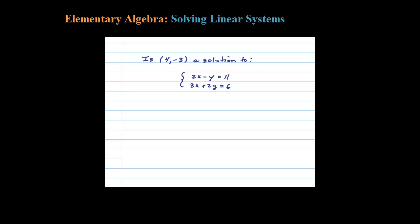Here we're asked if the ordered pair (4, -3) is the solution to this linear system. To answer that question, we're going to plug in these values — x is 4 and y is -3 — into both equations. If it solves both of those linear equations, then yes, it is going to be a solution. Wherever there's a variable, I like to put a blank parentheses.